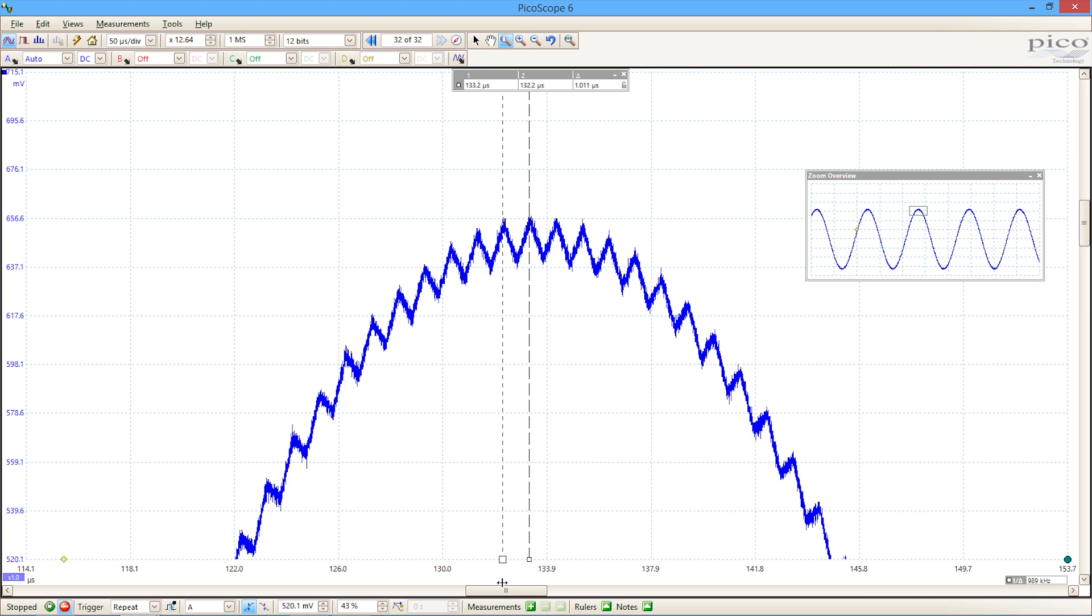So we've got a period of about one microsecond. So the frequency of the noise is at about a megahertz. I could use the horizontal rulers to measure the amplitude. So we've got noise of about 13-14 millivolts. So by switching to higher resolution we're learning much more about the characteristics of the noise that we need to investigate to solve that if it's a problem in our design.